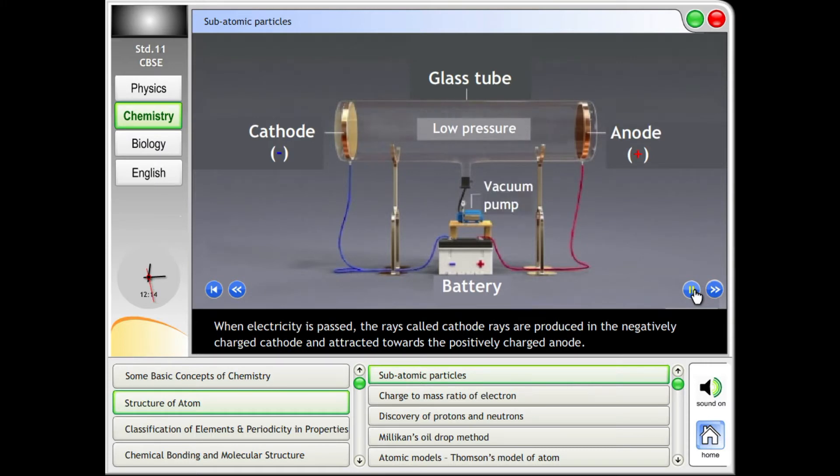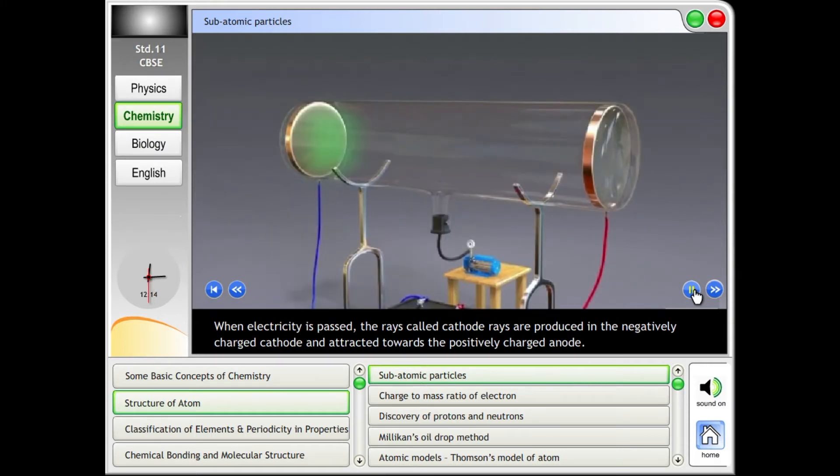When electricity is passed, the rays called cathode rays are produced in the negatively charged cathode and attracted towards the positively charged anode.